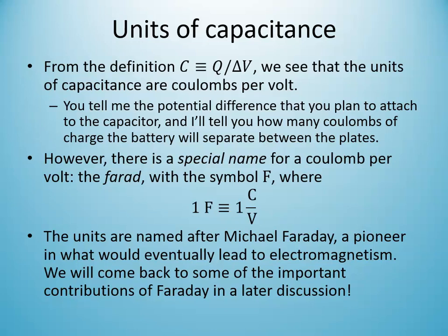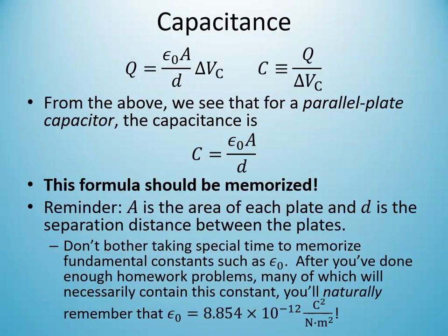The units of capacitance are called farads, given by the symbol F, where one farad equals one coulomb per volt. A farad is a very large unit of capacitance — you don't want to be charging capacitors with capacitances of one farad to high voltages. For a parallel plate capacitor, C = ε₀A/d — that should be memorized.